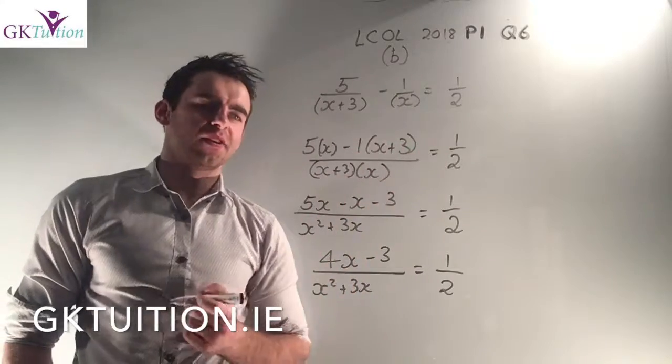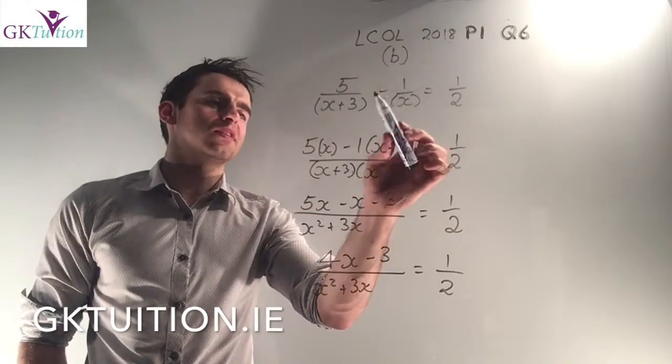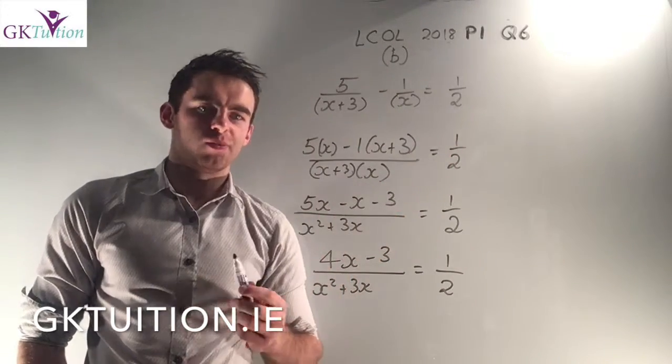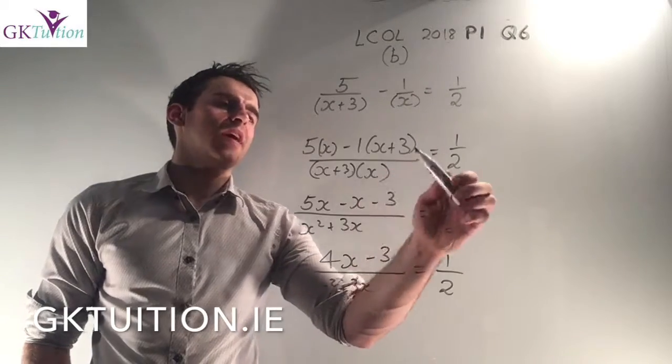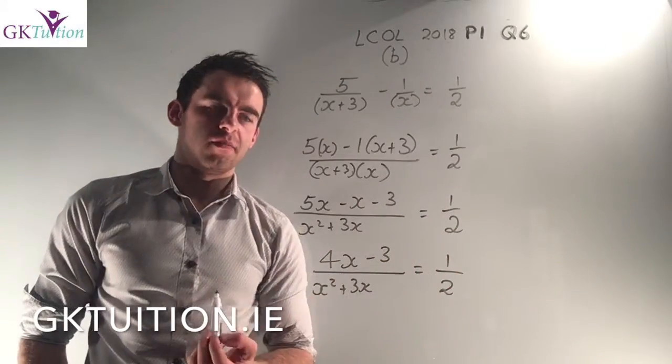Now I have to worry about the second term. So I take down a minus, there's a -1 there so I take down my -1. Now I have to ask myself how many times does x divide into the common denominator?